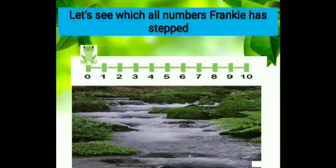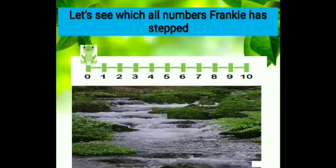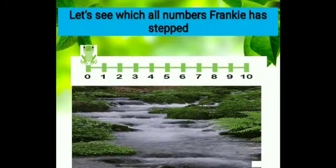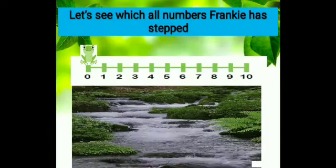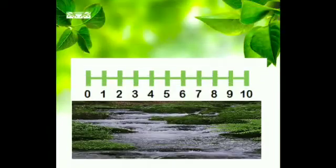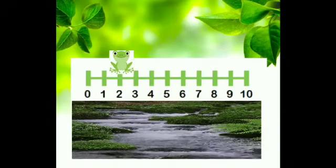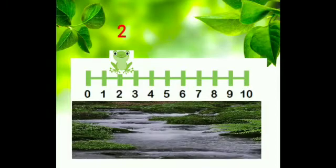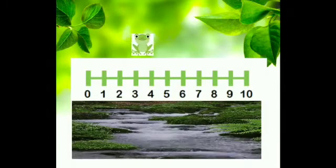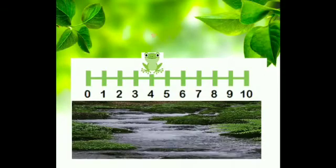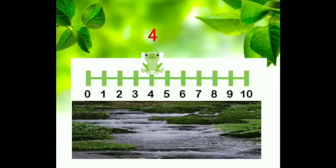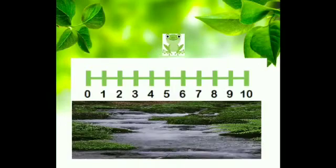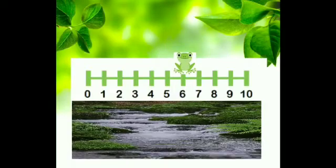Now he is so happy! Let's see which numbers Frankie has stepped. He was on number zero. Then he jumped two times — one, two — and reached number two. Three, four — number four. Five, six — reached number six.